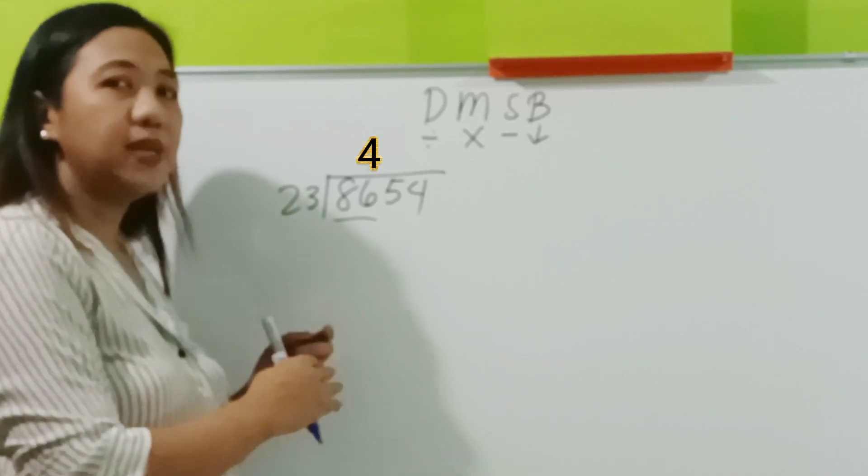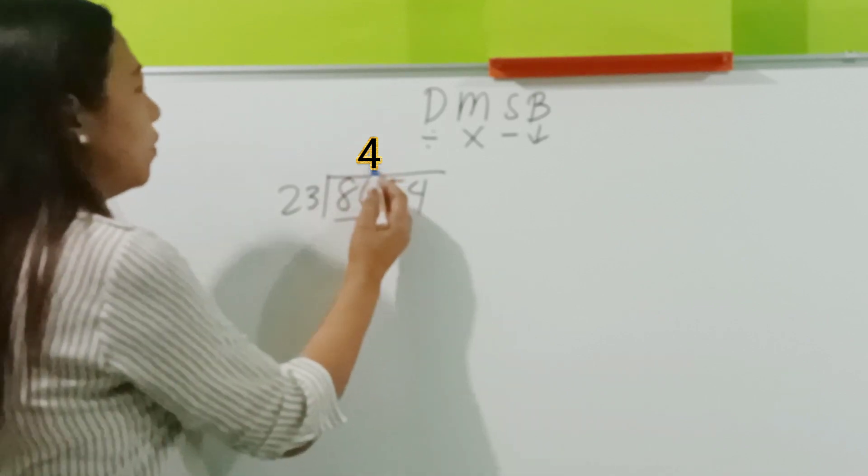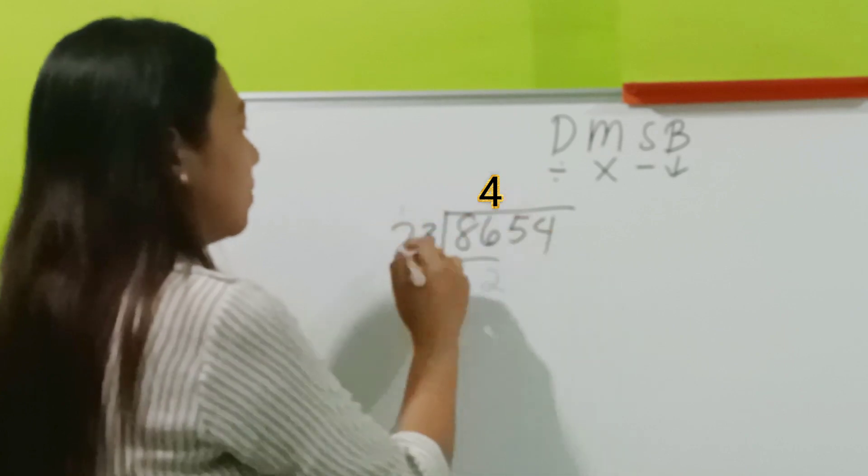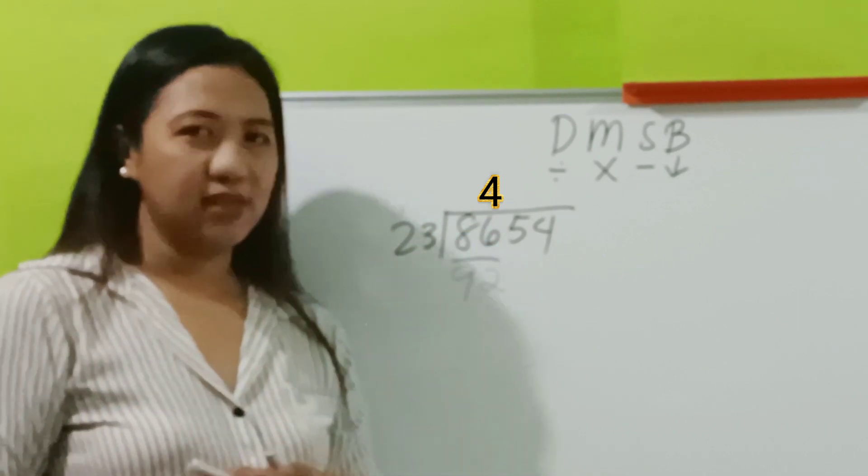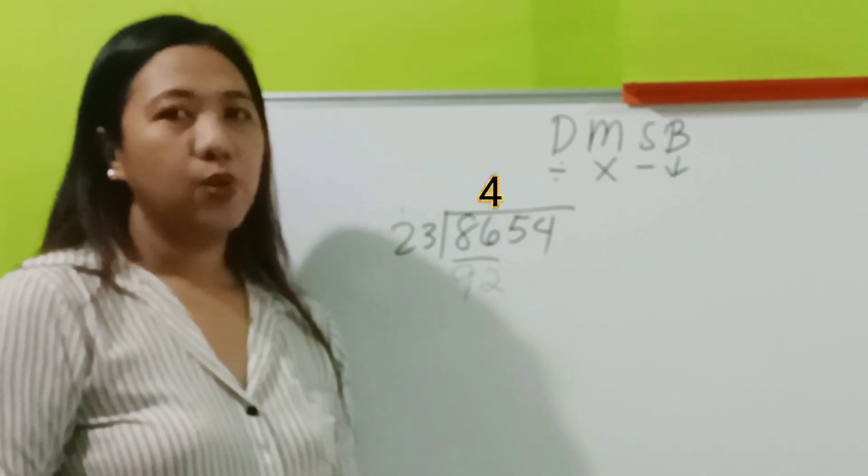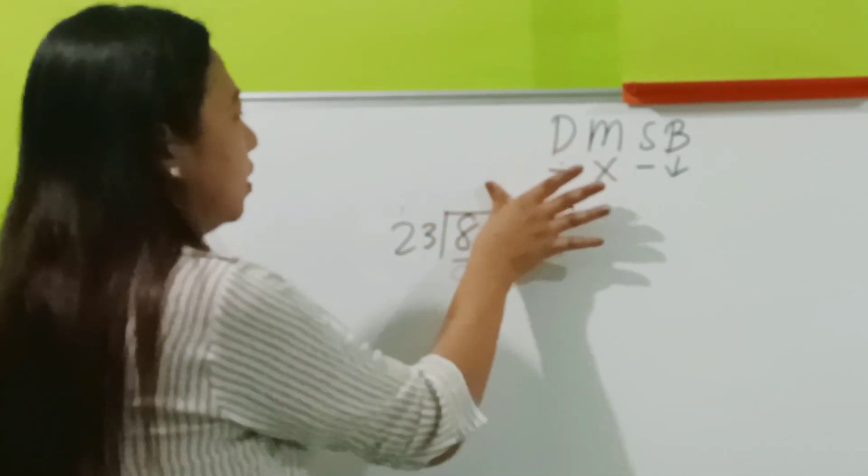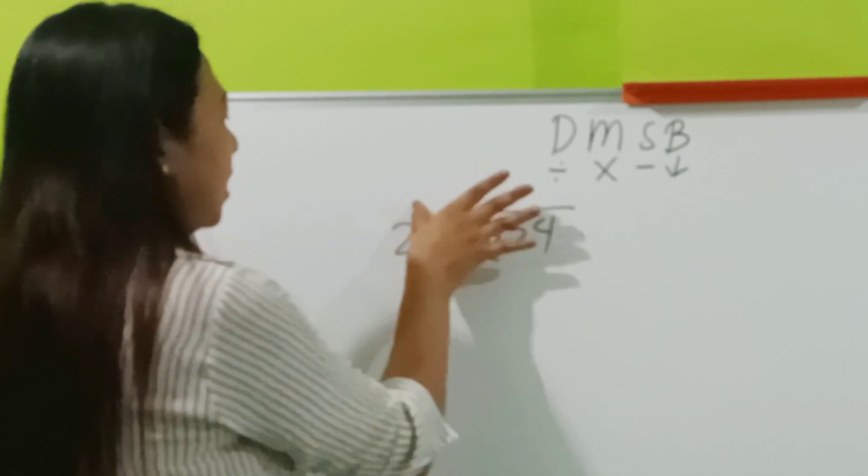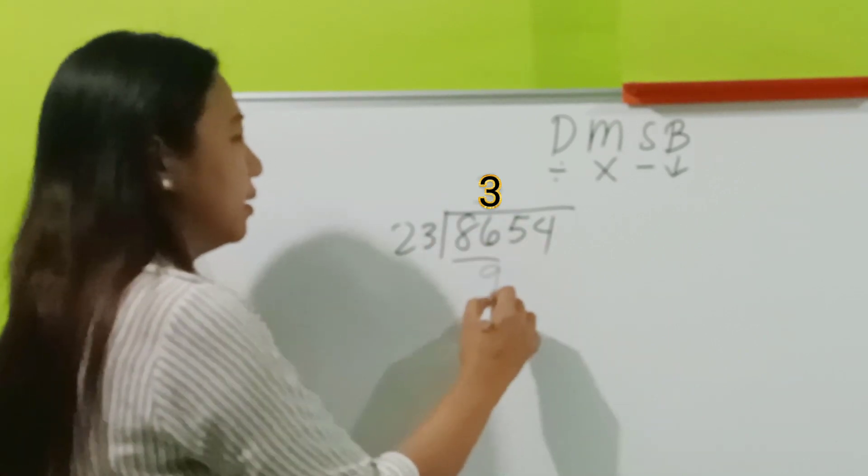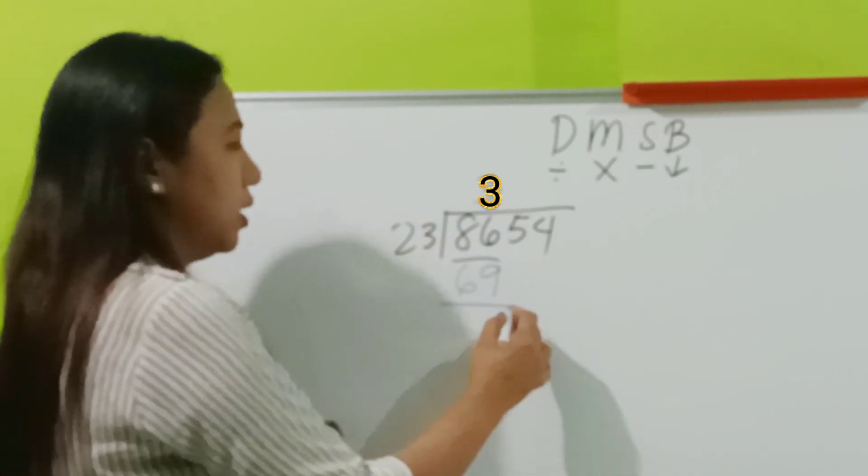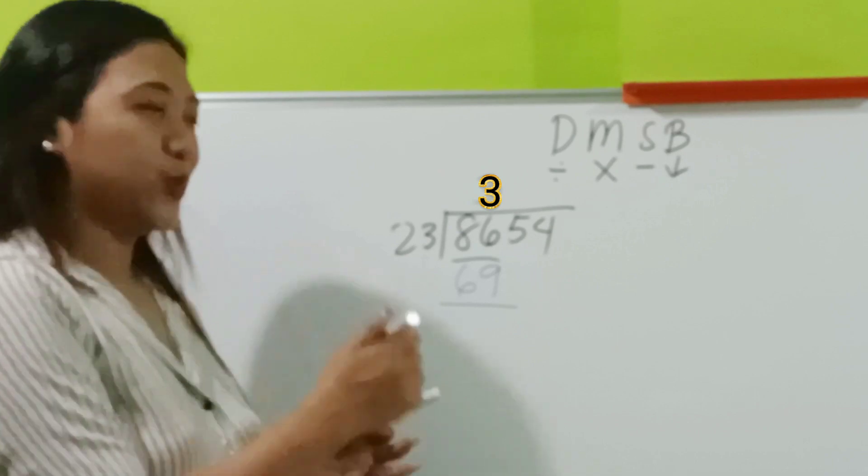Take note that the product should be less than or equal to 86. So, let's see. 4 times 2 is 8, plus 1 is 9. So, as you can observe, 92 is bigger than 86. So, what do we do? We have to subtract 1 from 4. So, 4 minus 1 is 3. Let's now try 3. 3 times 3 is 9. 3 times 2 is 6. So, is 69 less than 86? Yes. So, we can now proceed.